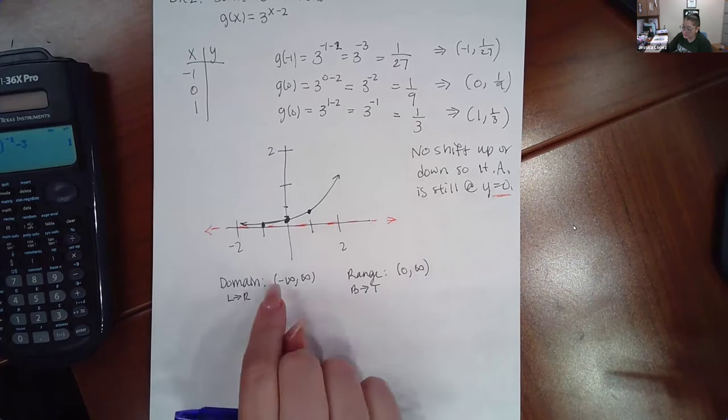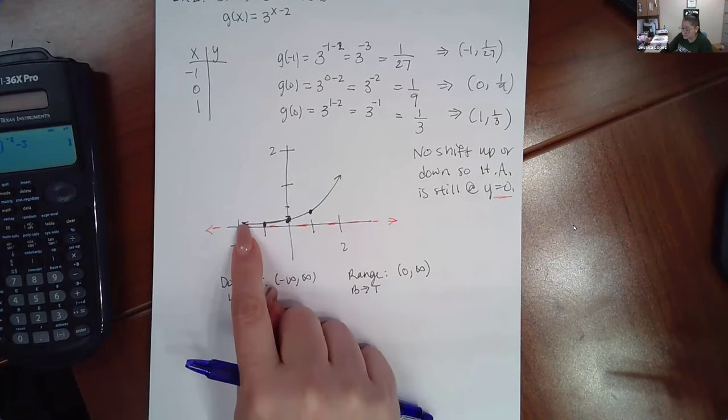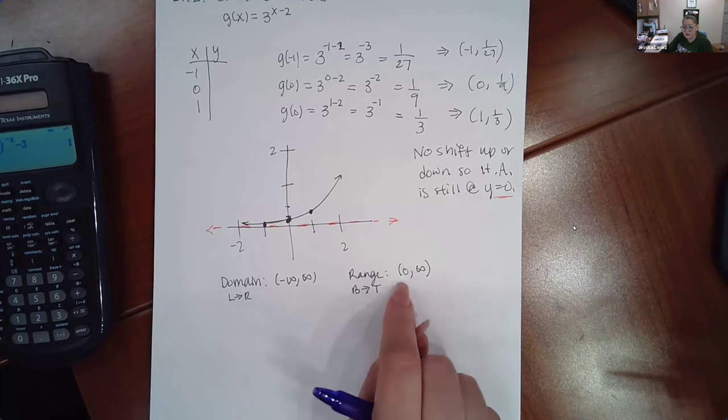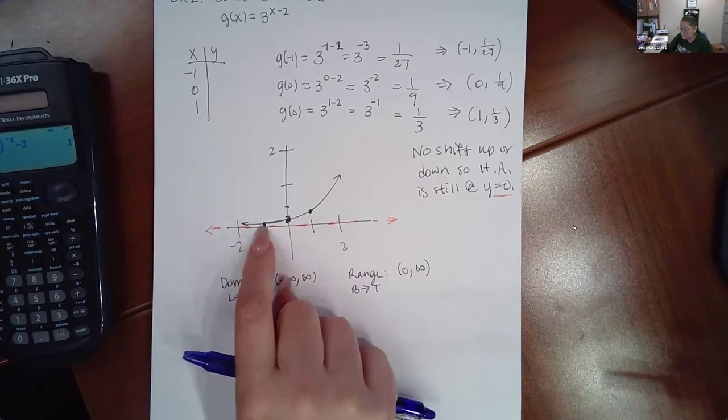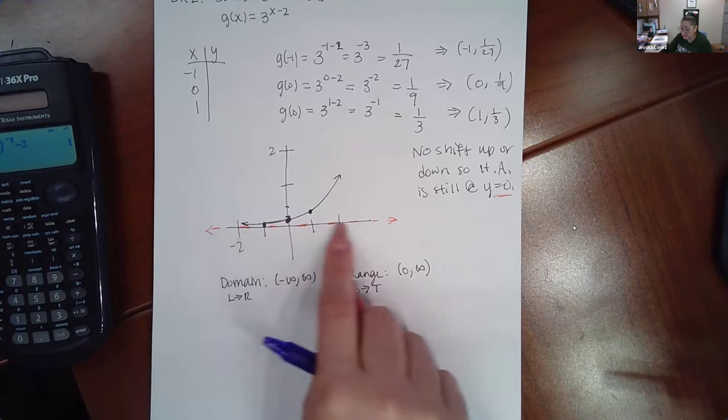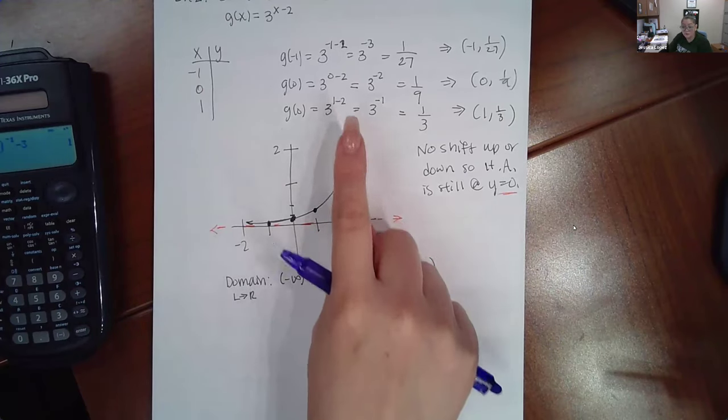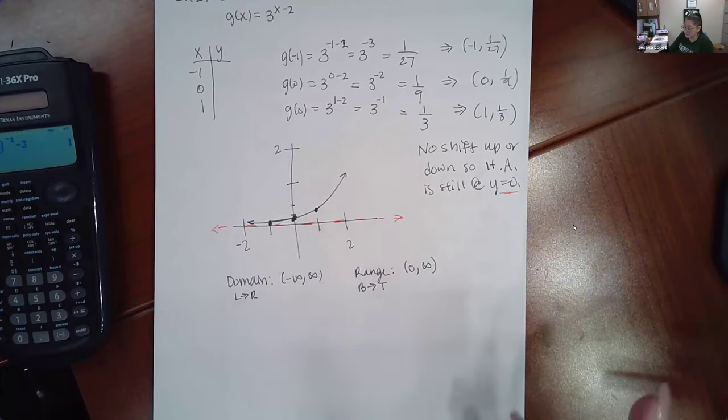Now again for domain and range: left to right x values, so left forever, right forever, negative infinity to infinity. For range, bottom to the top, this orange line is the very bottom but I can never touch it so it's zero with a parenthesis, but the y values do go up forever so we have positive infinity there.